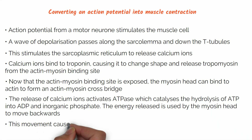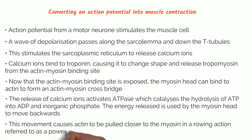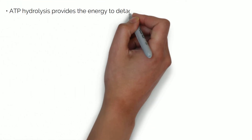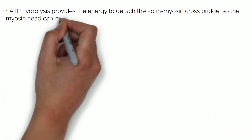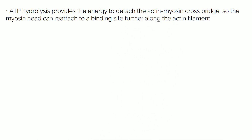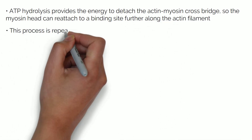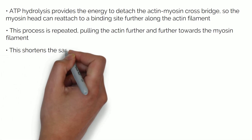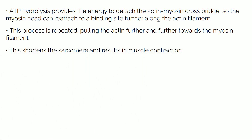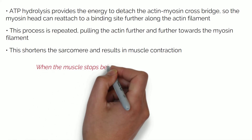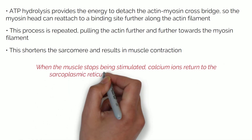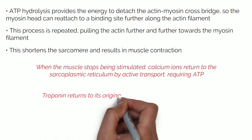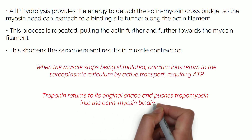This movement causes actin to be pulled closer to the myosin in a rowing action, referred to as a power stroke. ATP hydrolysis provides the energy to detach the actin-myosin crossbridge so the myosin head can reattach to a binding site further along the actin filament. This process is repeated, pulling the actin further and further towards the myosin filament. This shortens the sarcomere and results in muscle contraction.